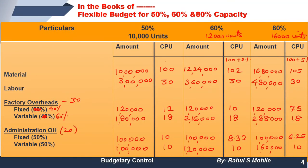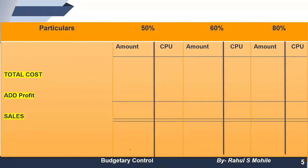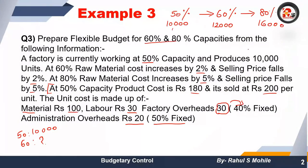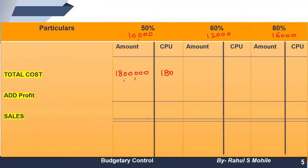Now we total the cost columns. At 50% capacity (10,000 units), the total cost comes to 18,00,000, giving a CPU of 180. Sales at 50% capacity: selling price is 200 per unit × 10,000 = 20,00,000. Profit = 20,00,000 − 18,00,000 = 2,00,000. Sales is treated as a balancing figure, and the profit CPU is 20.